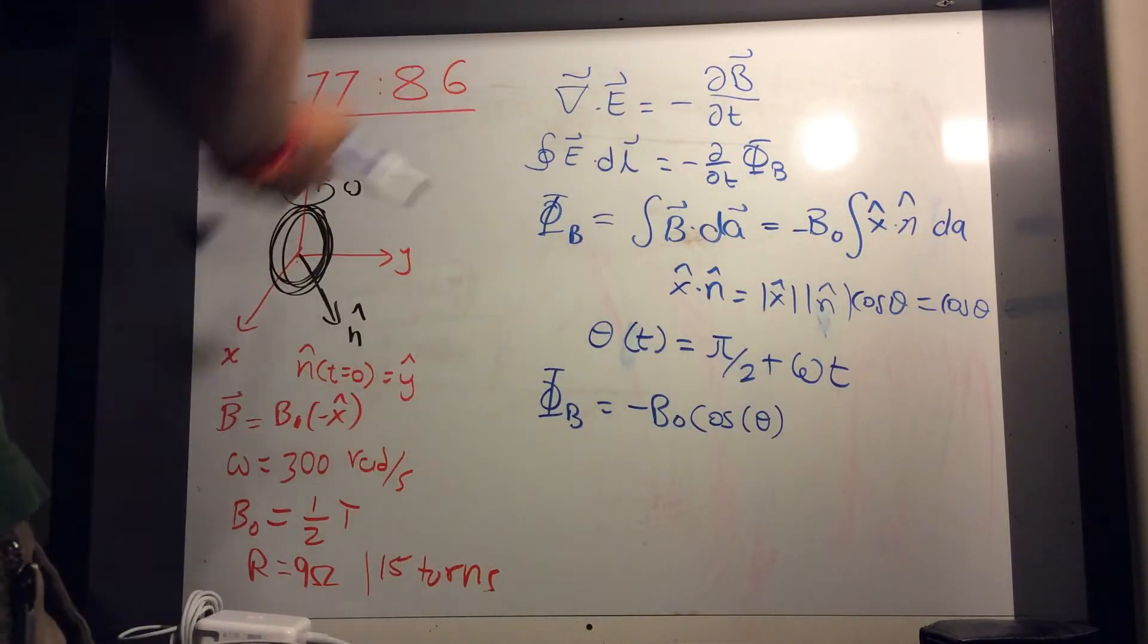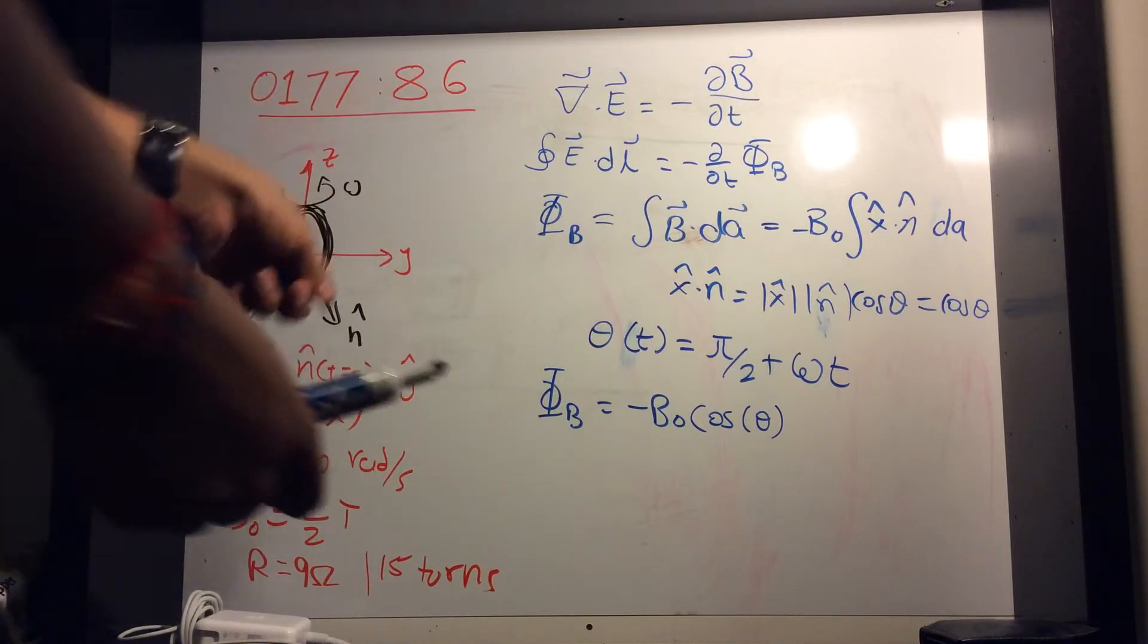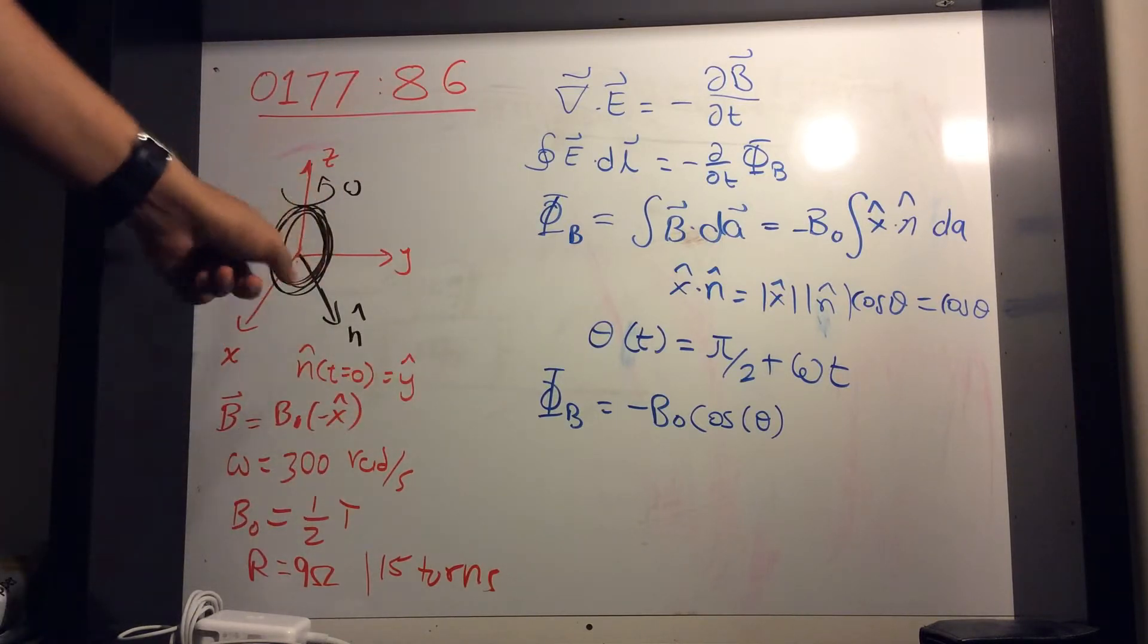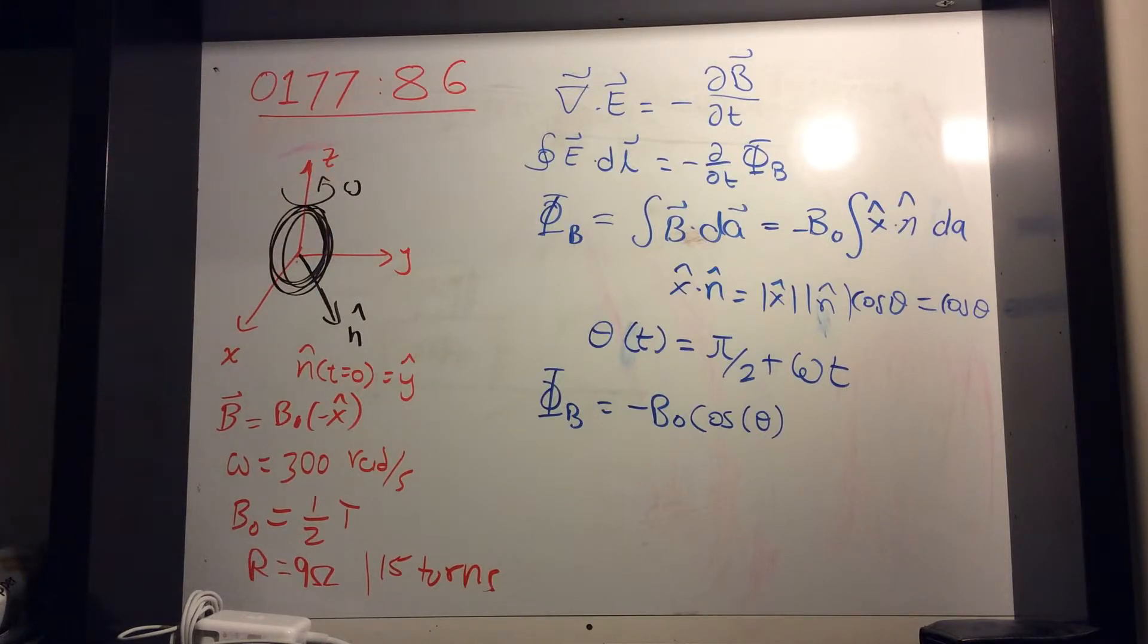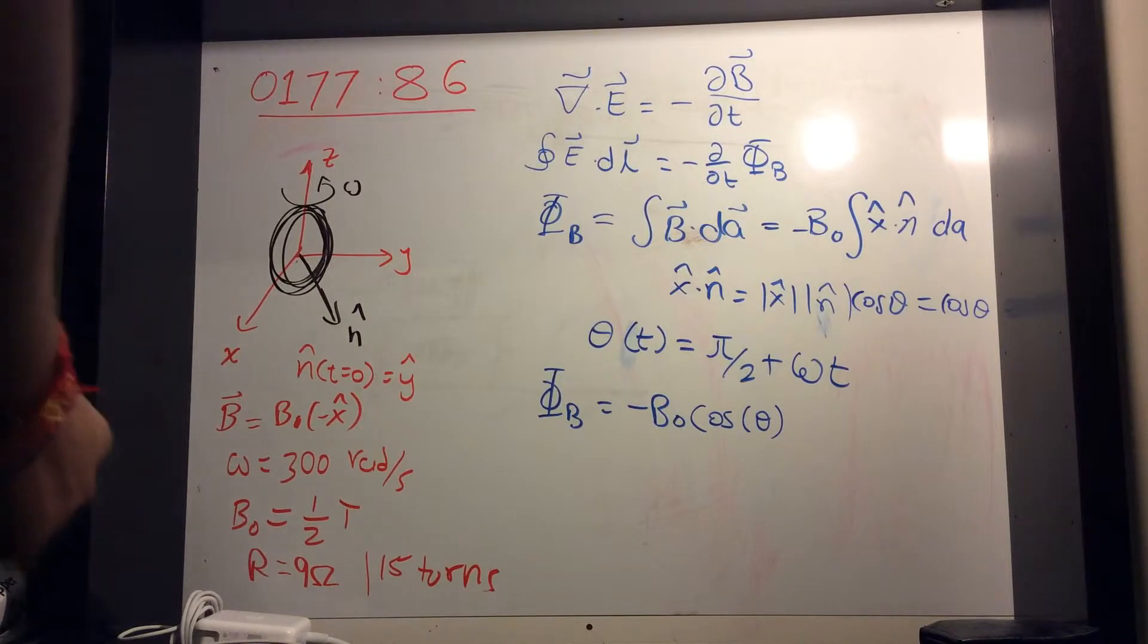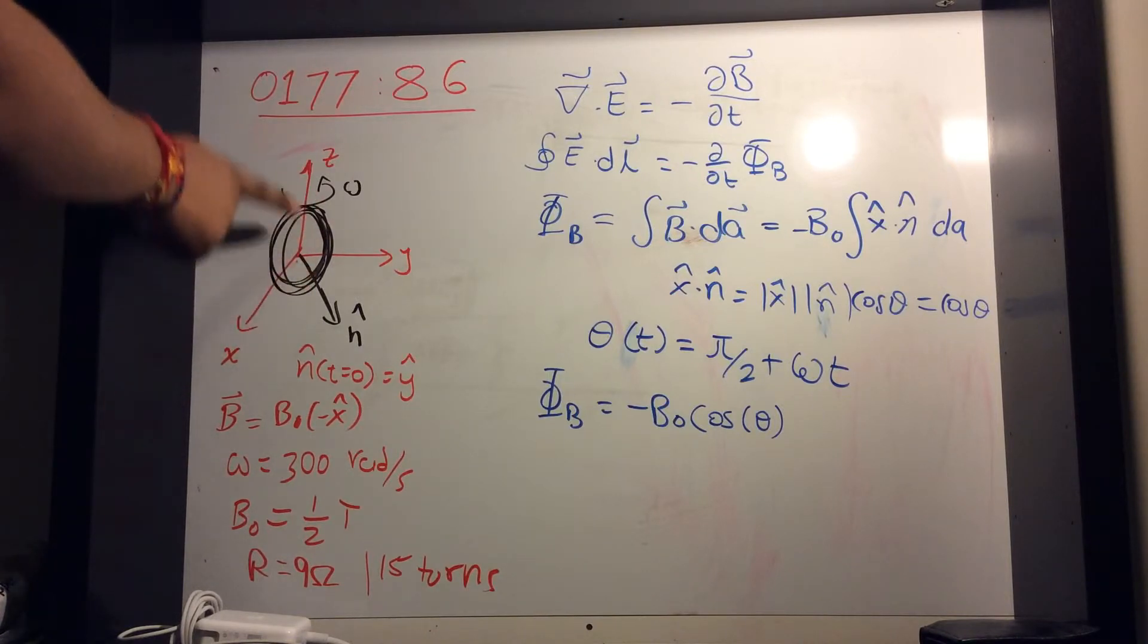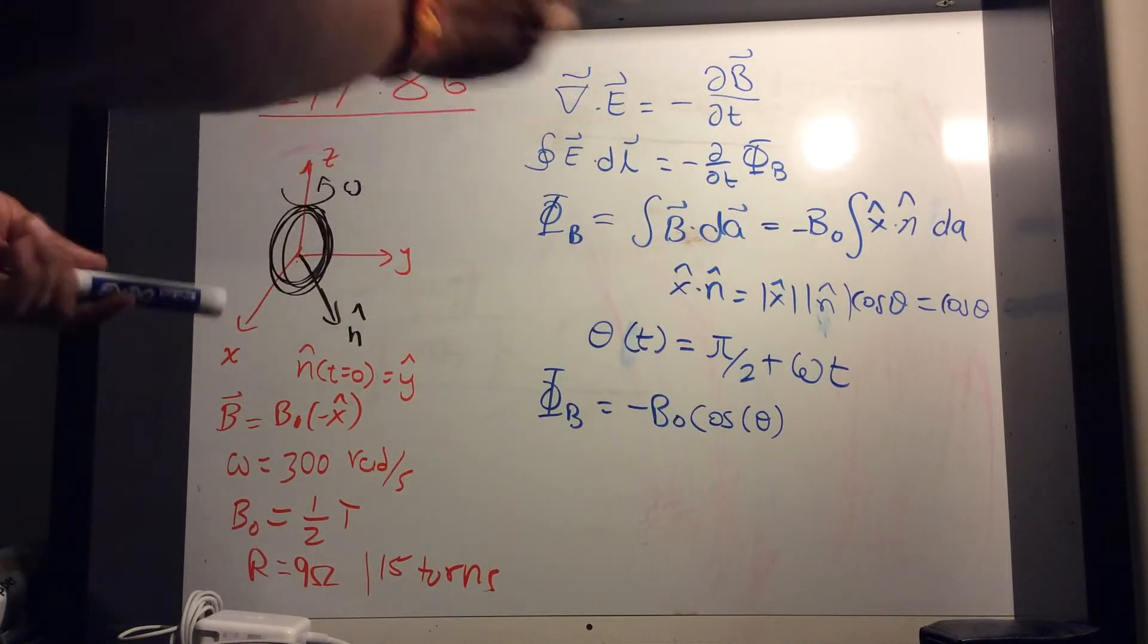Now integral of dA is just the area of that loop, area covered by that loop. Well, did it tell us the radius of the loop? Well, say the radius was r... I mean, say the radius was just some capital R. So the area covered by the loop would be pi r squared.